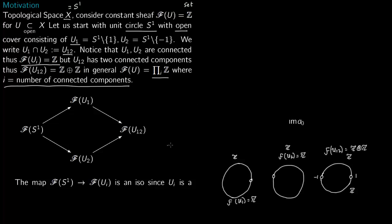We have a standard diagram: U1 and U2 are contained in S¹, and U12 is contained in both. These are just simple inclusions. I have drawn hooks to indicate inclusion. Now once you apply the sheaf to it, there is contravariance, so all the arrows reverse.